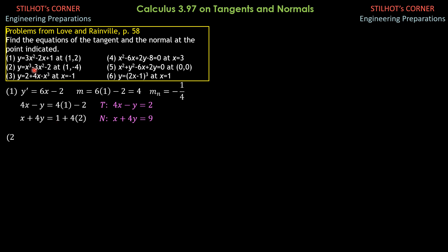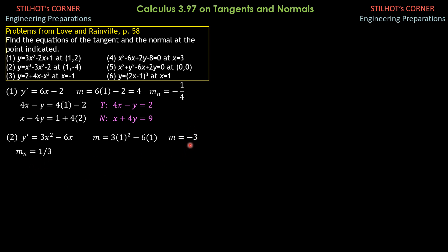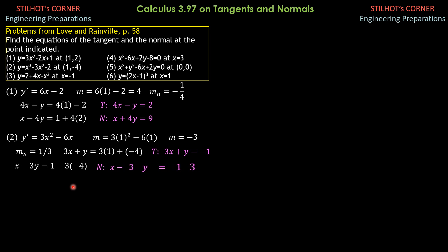For number 2, y prime is equal to 3x squared minus 6x. At x equals 1, that is 3 times 1 squared minus 6 times 1, which equals negative 3 — the slope of the tangent. The slope of the normal is positive one-third, the negative reciprocal of negative 3. For the tangent: 3x plus y equals 3x1 plus y1, so 3x plus y equals 3 times 1 plus negative 4, giving 3x plus y equals negative 1. For the normal: x minus 3y equals 1 minus 3 times negative 4, so x minus 3y equals 13.